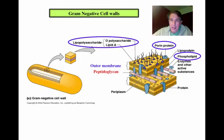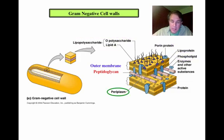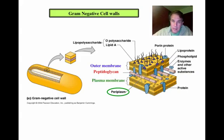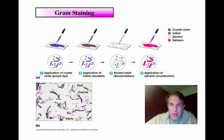The periplasm refers to the space that exists between the two membranes. You have the inner plasma membrane and the outer membrane, and the periplasm is that space between them. In a Gram-negative cell, when we talk about the cell wall, we're referring to both the peptidoglycan and that outer membrane.